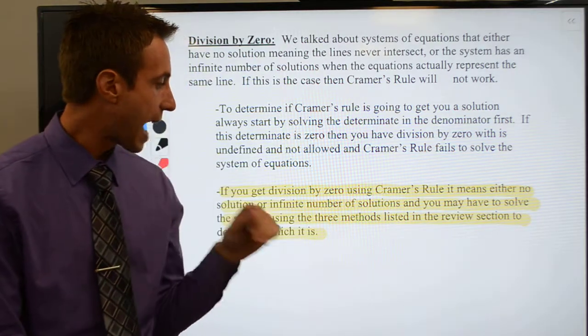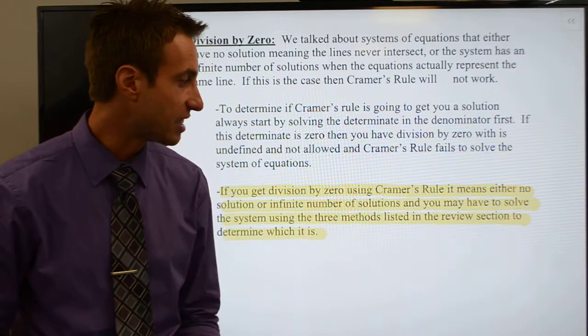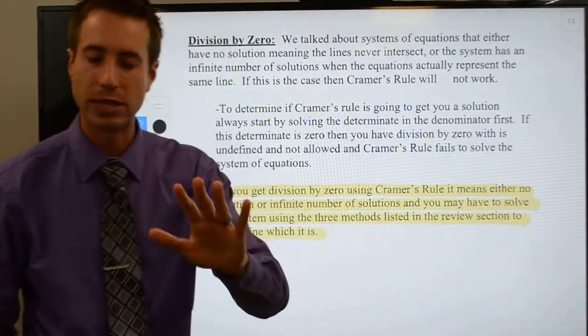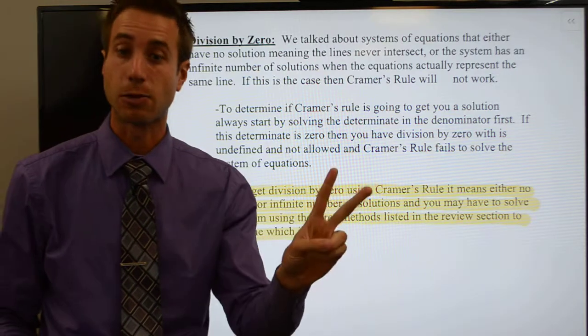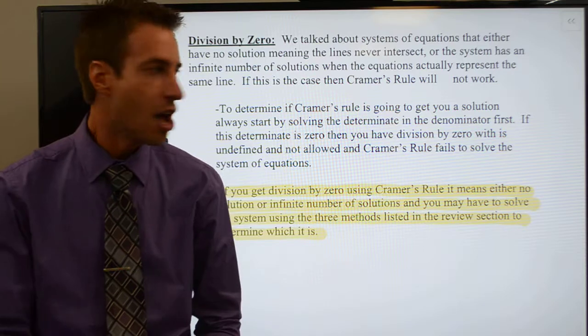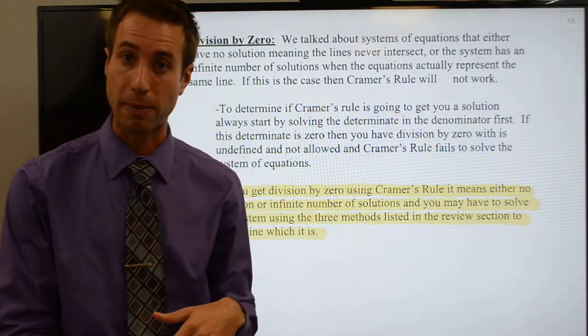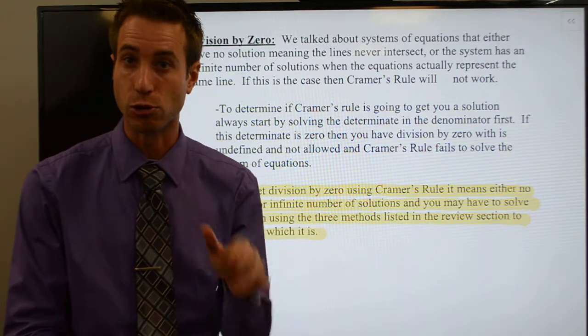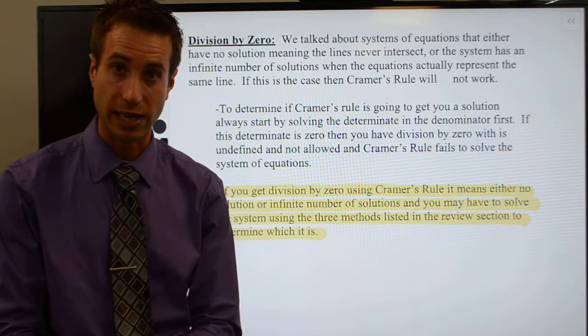So what we have is division by zero in Cramer's rule, you might have to solve using a different method either the graphic which we did graph systems of three equations, but if you had a system of two equations you could graph it, if it's a system of three equations you could do the algebraic method that we learned, either the substitution or the elimination methods would certainly work as well.